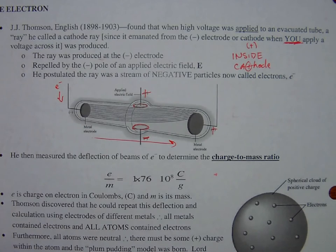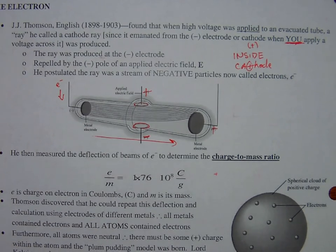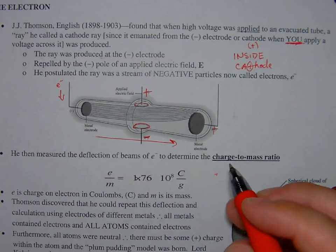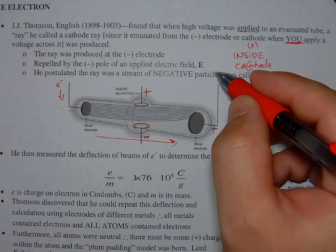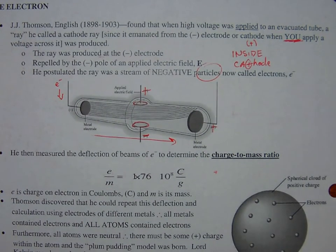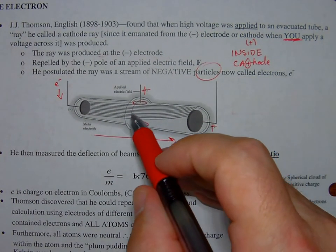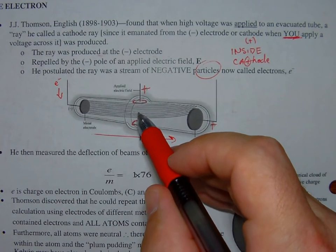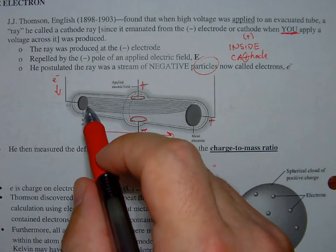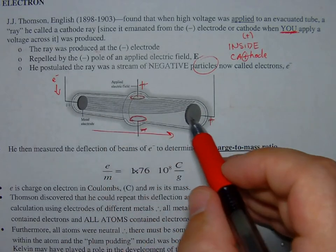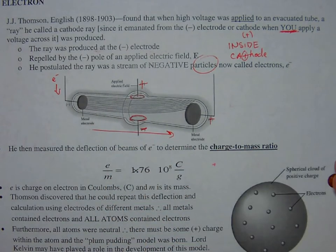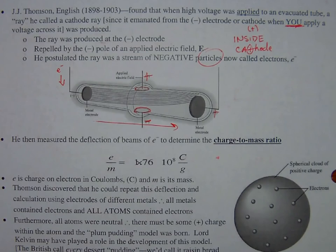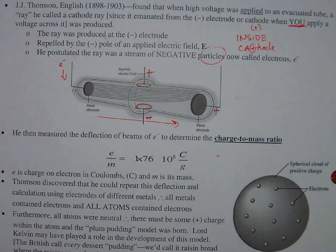Thomson postulated that the ray, whatever it was, was a stream of negative particles. He postulated they were particles because they had mass. Remember there was a pinwheel that looked like the paddle on a steamboat or old riverboat like Tom Sawyer days, and the wheel would actually move across the cathode ray. So it definitely had mass, so we called them particles. And it was definitely negatively charged because it was deflected away from the negative and towards the positive.